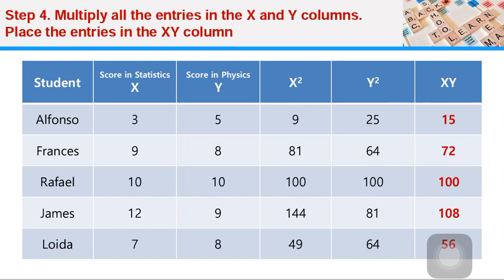Nine for X, eight for Y. You multiply them. The XY is 72. 10 times 10, the XY is 100.